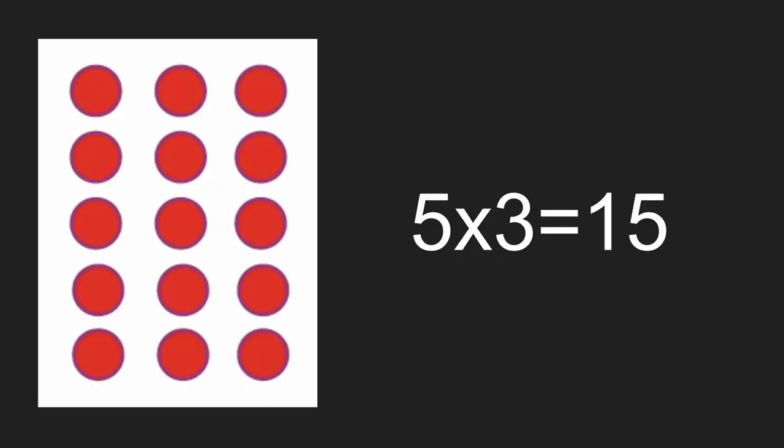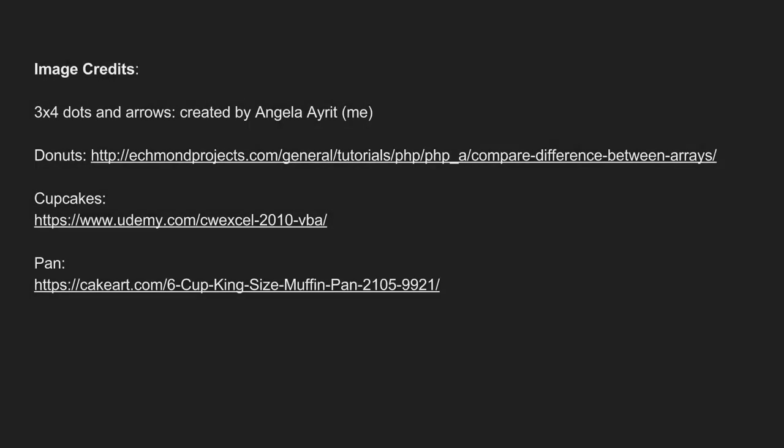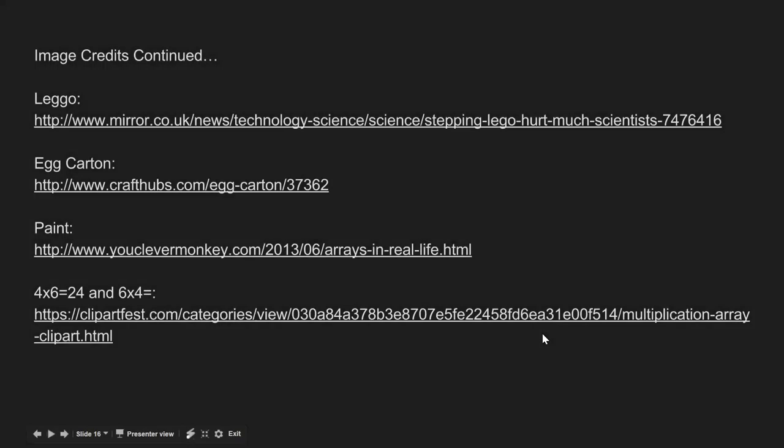Here you will see the final array. There are 5 rows and 3 columns and all together 15 dots.